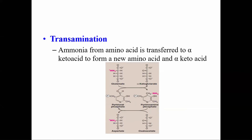In simple terms, transamination is the transfer of an amino group from one amino acid to another keto acid to form a new amino acid. During transamination, most of the 20 common amino acids present in proteins can participate, except leucine, proline, and lysine. The rest of the 17 amino acids can participate in transamination. The acceptor for the amino group from amino acids is alpha-ketoglutarate.